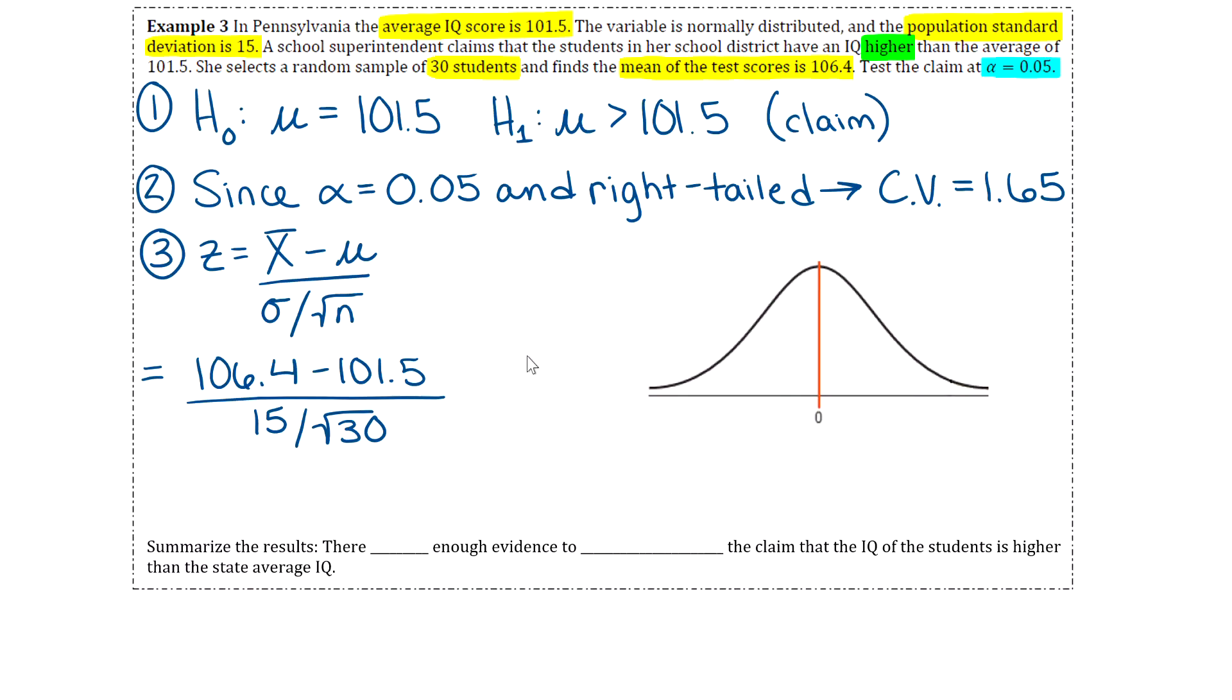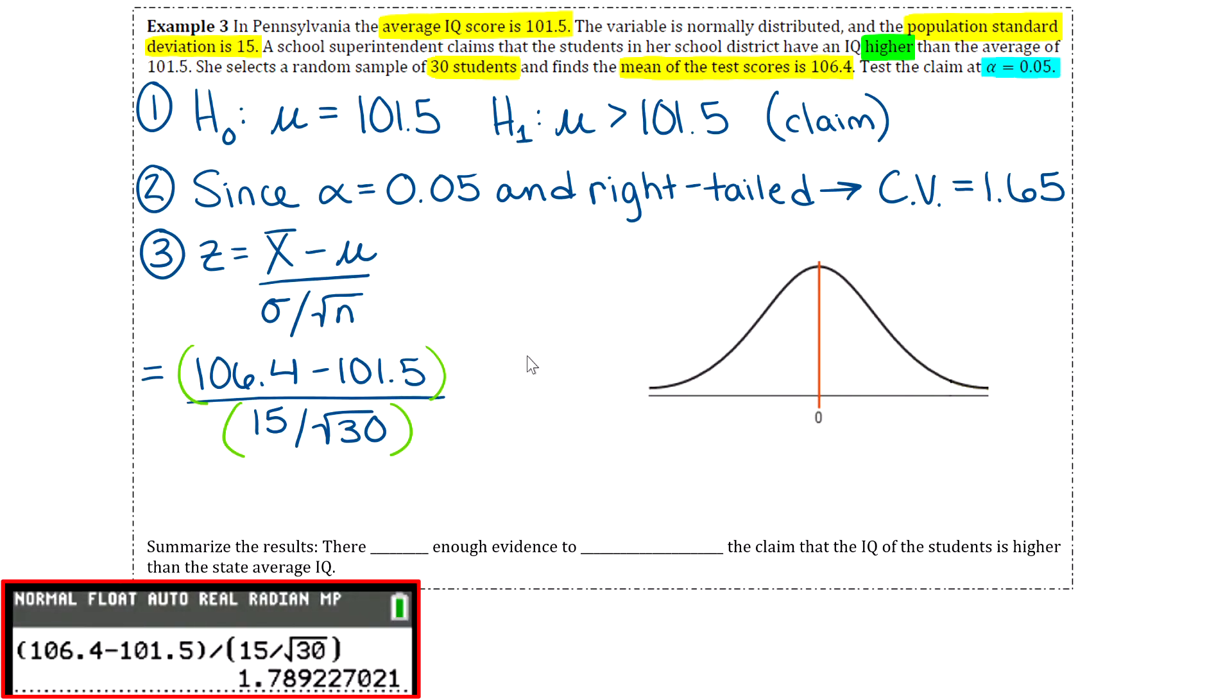If you have your calculator, definitely grab that out now. This is one of those things that students mess up all the time when they're putting this in their calculator. When you put this in, you have to put parentheses around the entire numerator and the entire denominator. If you want to pause this video and try it for yourself, that would be a good idea. I am going to pop my calculator screen up on here. Just make sure you have parentheses around the numerator, then do the divide sign, and then parentheses around your entire denominator. What you should get is 1.789 and so on. Z values, remember we always round to two decimal places. So I'll round that to 1.79. That's our test value.